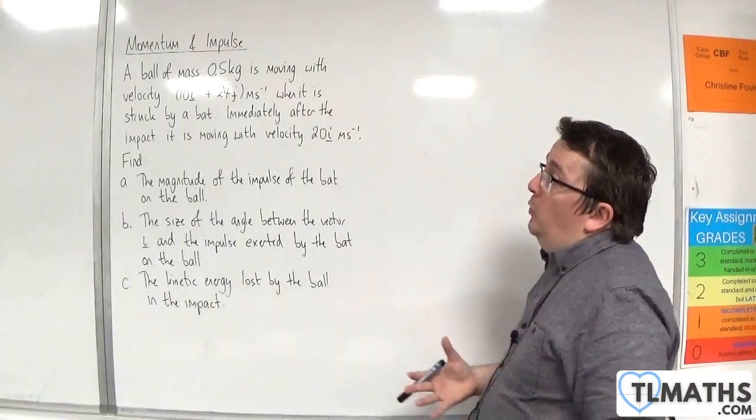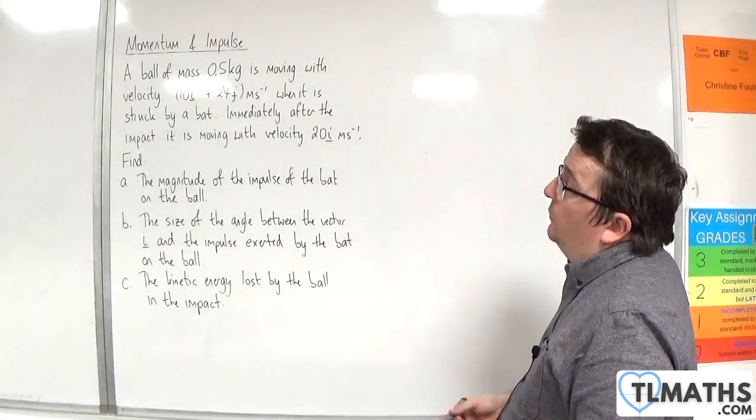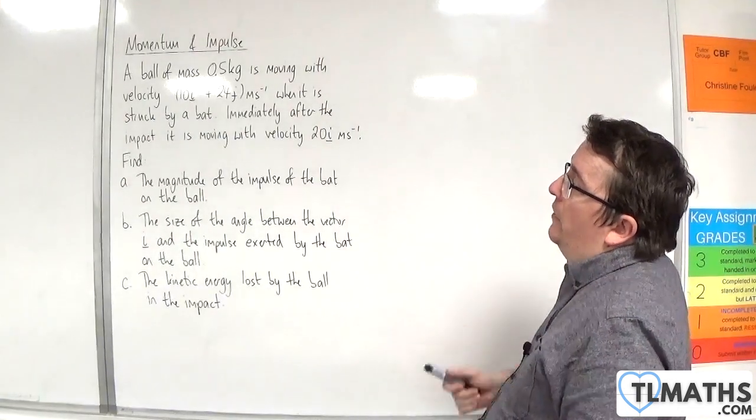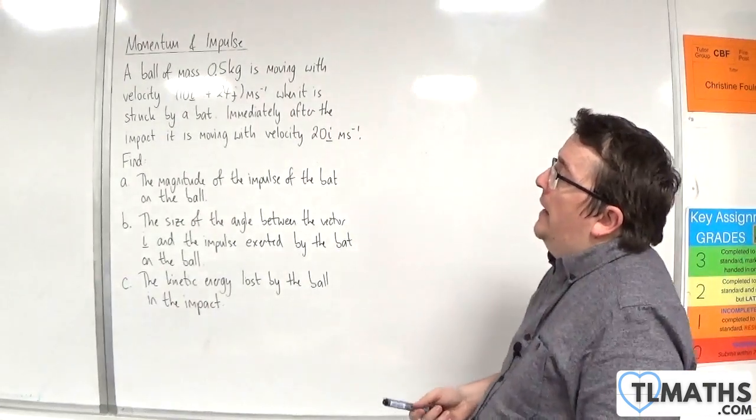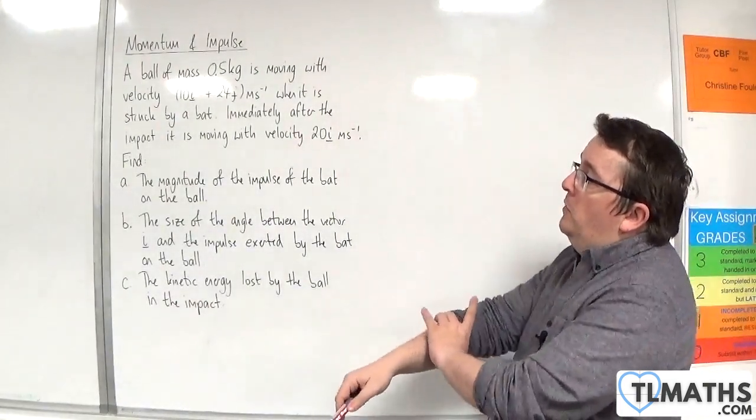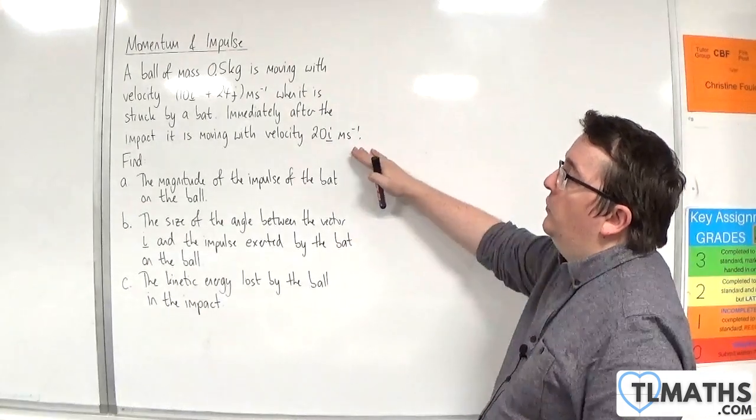So in this video we have a ball of mass 0.5 kilos moving with velocity 10i plus 24j meters per second when it is struck by a bat. Immediately after the impact it is moving with velocity 20i meters per second.